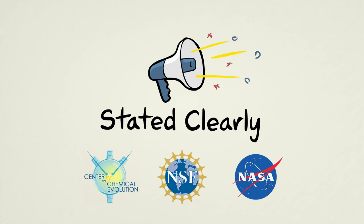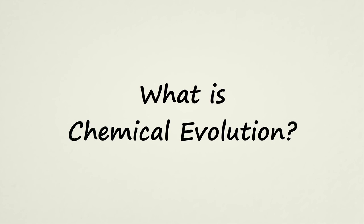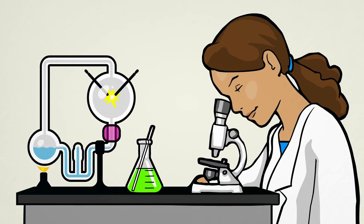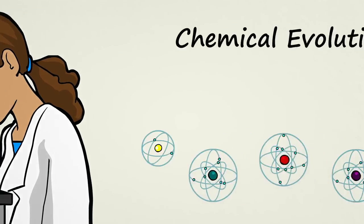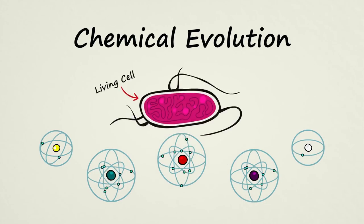Stated Clearly presents What is Chemical Evolution? Scientists have reason to think that the first living cells on Earth came about through a natural process called chemical evolution.